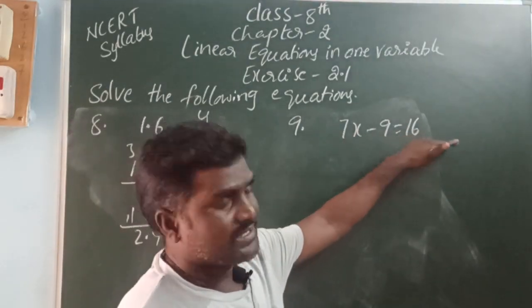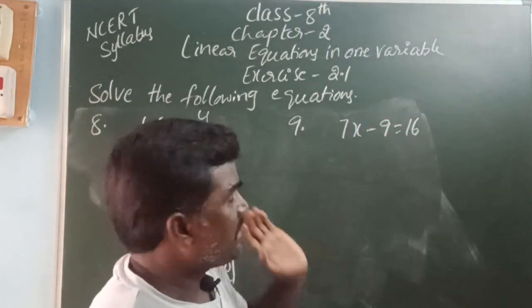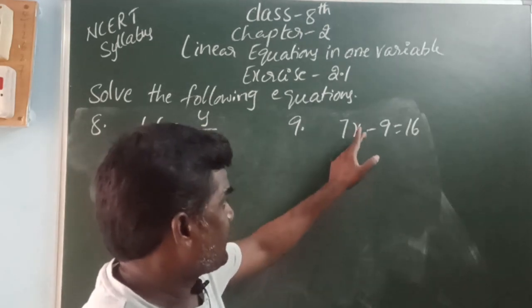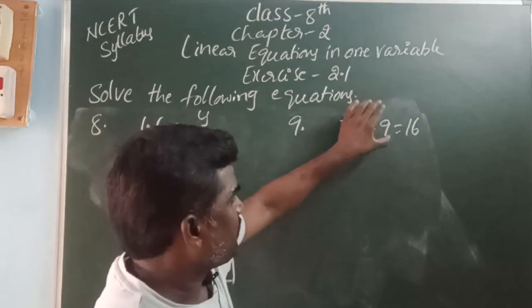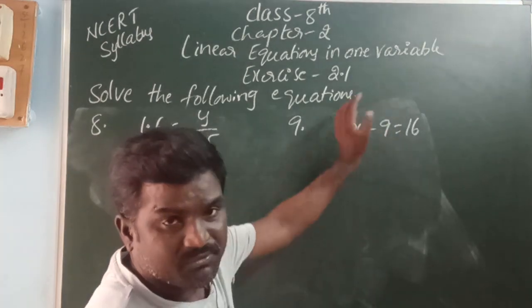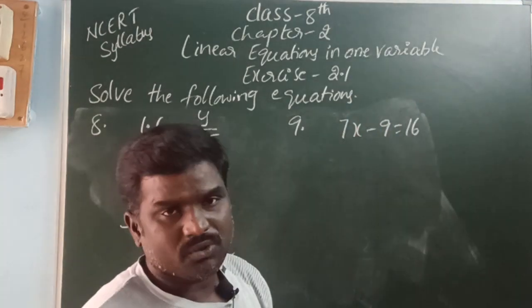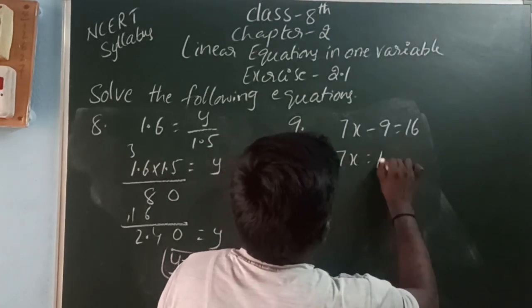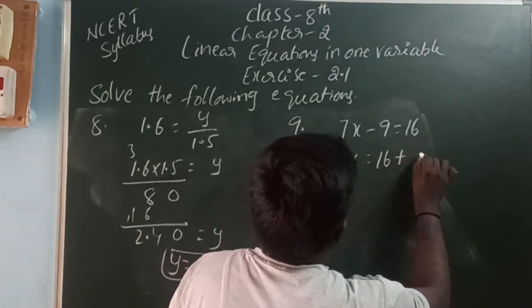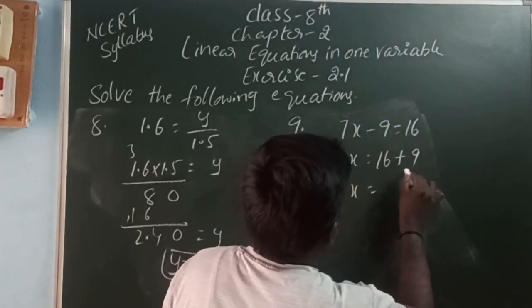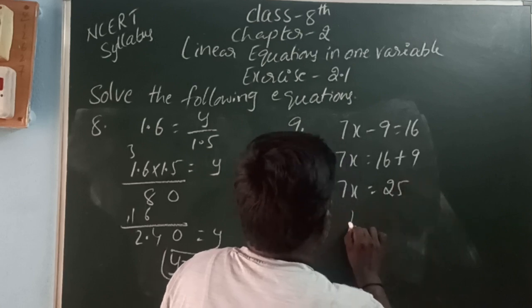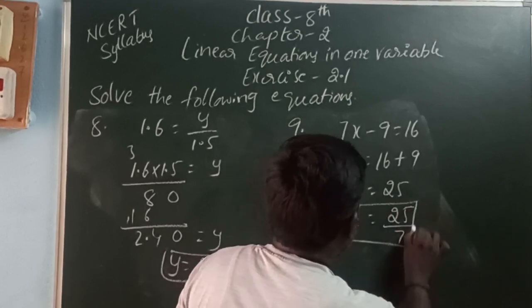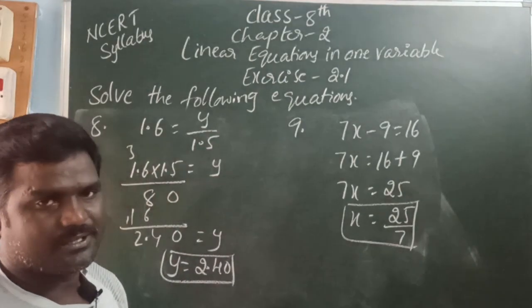7x minus 9 is equal to 16. The variable is x. The variable x is multiplied by 7, and from this we subtract 9. Minus 9 is moving to the RHS and it becomes plus. So 7x is equal to 16 plus 9, which is 25. Therefore, x is equal to 25 by 7. The value of variable x is 25 by 7.